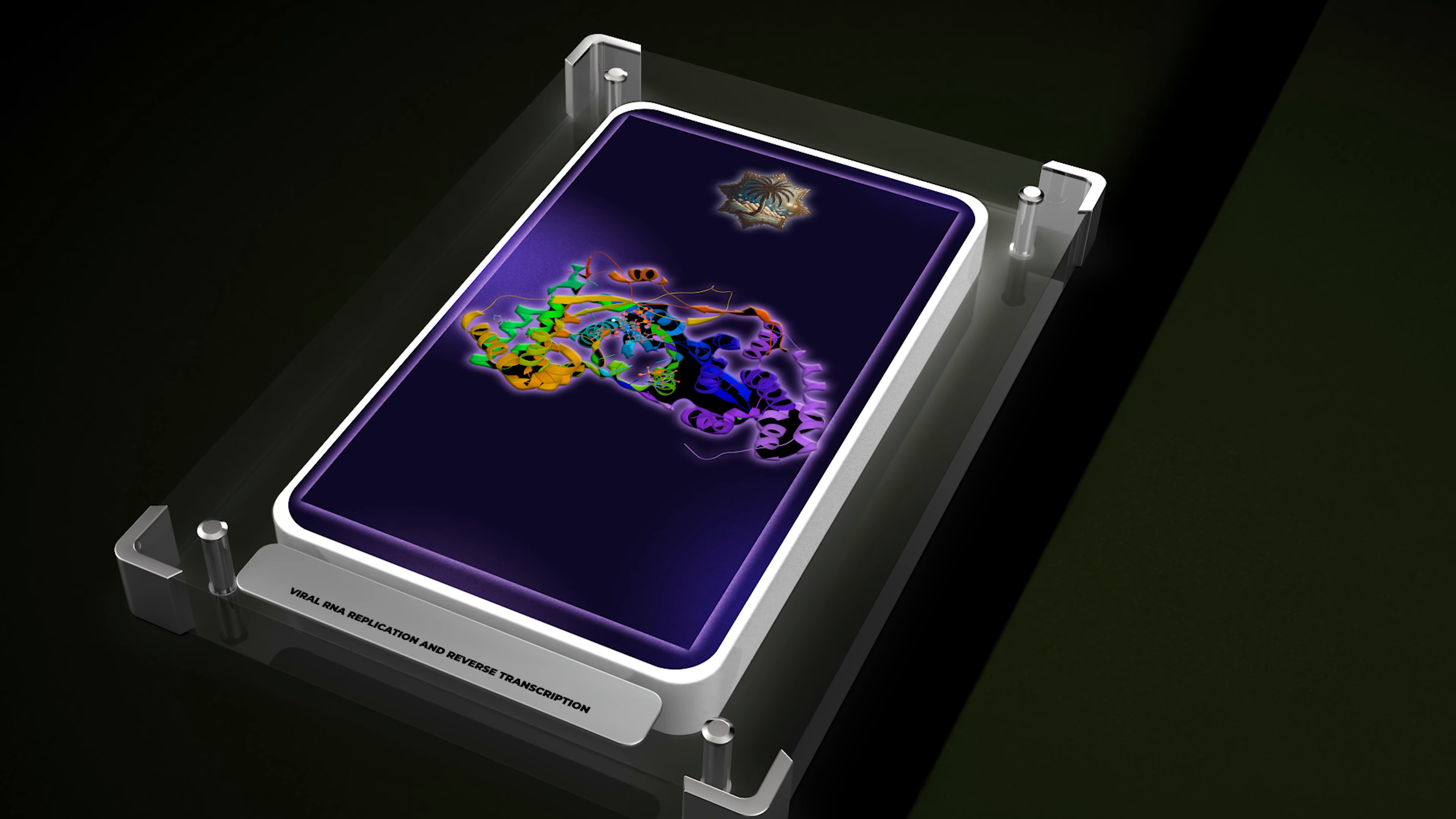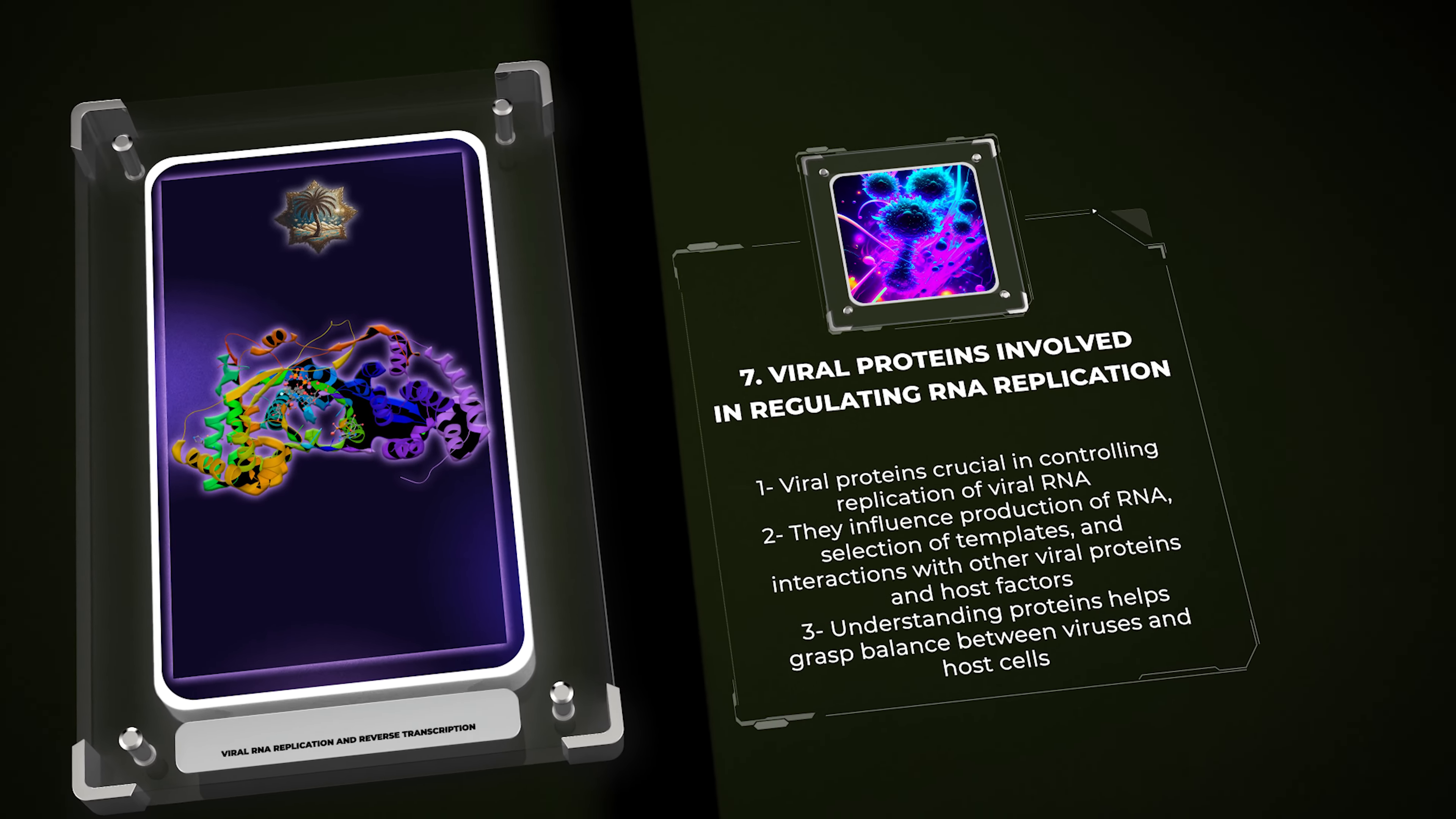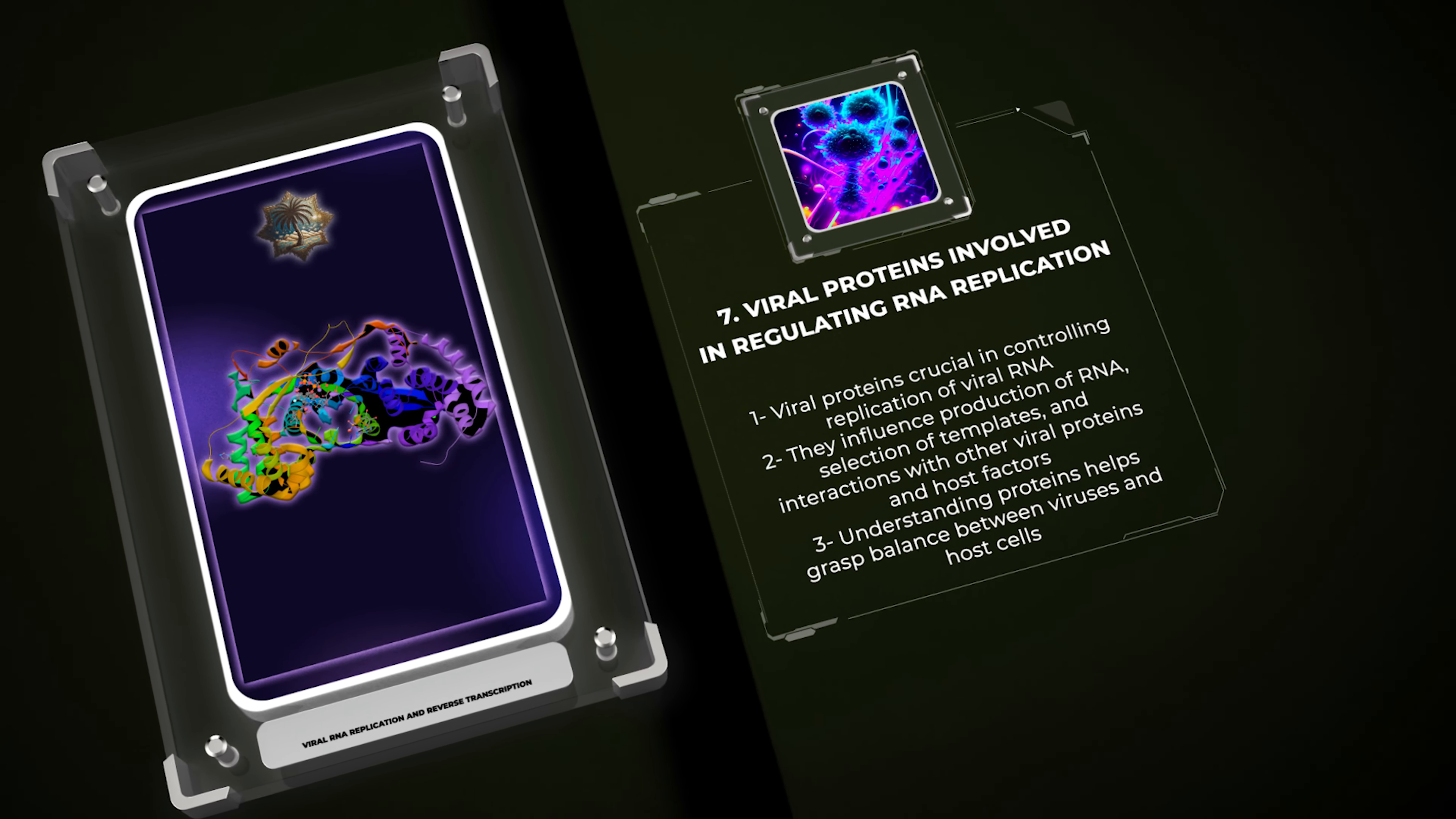Viral proteins play a crucial role in controlling the replication of viral RNA. They influence the production of RNA, the selection of templates, and interactions with other viral proteins and host factors. Understanding these proteins helps us grasp the delicate balance between viruses and host cells.